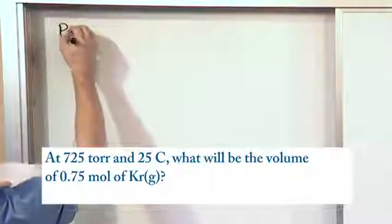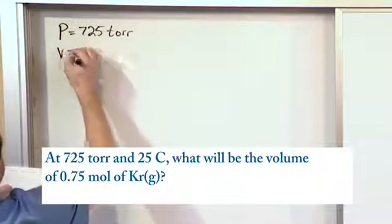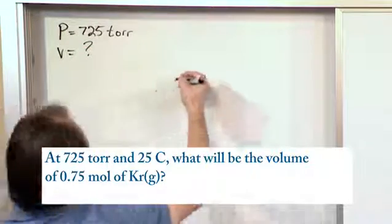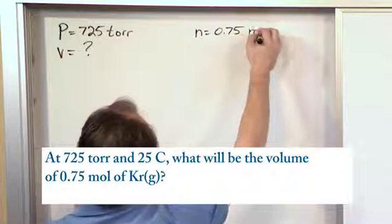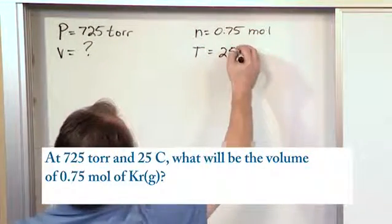So the pressure is 725 torr. The volume is what we're trying to find. It says what will the volume be, so I'll put a question mark there. The number of moles is 0.75 moles. And the temperature is given to us as 25 degrees Celsius.